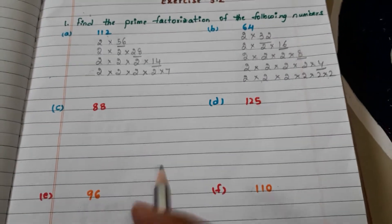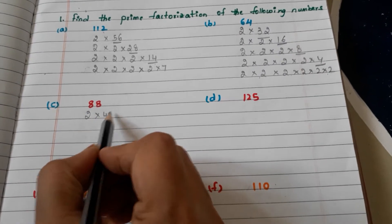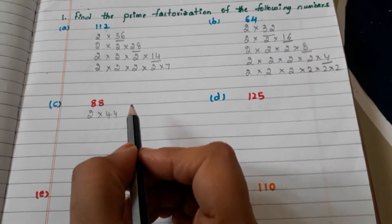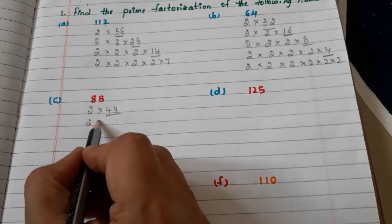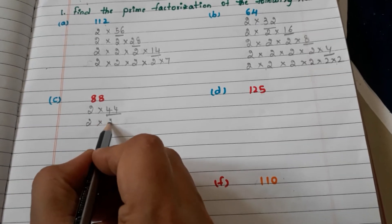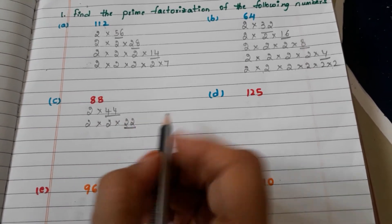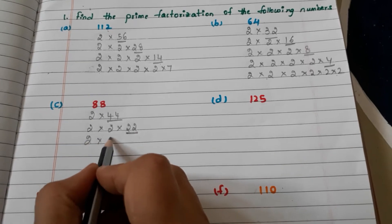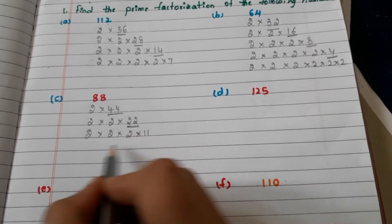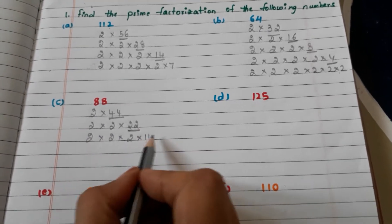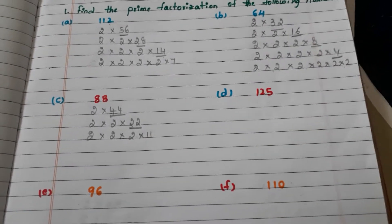Let us go with another number, 88. How we can write it? 2 into 44. How we can write 44? 2 into 2 into 22. Now 22, how we can write? 2 into 2 into 2 into 11. You observe here, all are prime numbers, so this is prime factorization.